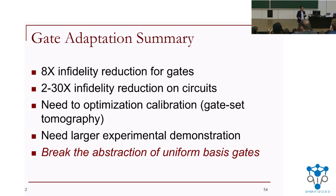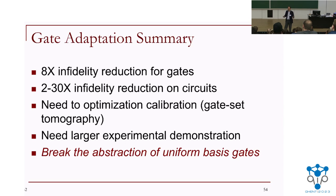The key idea: assume complexity in the software to allow for variation in the hardware. Not only does this improve fidelity, it potentially makes the machine easier to build — you don't need as tight constraints on variation, and as machines get larger, variation increases anyway. Breaking the abstraction of having a uniform basis gate set across your machine is the principle here.